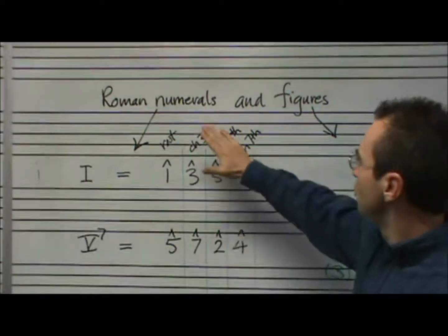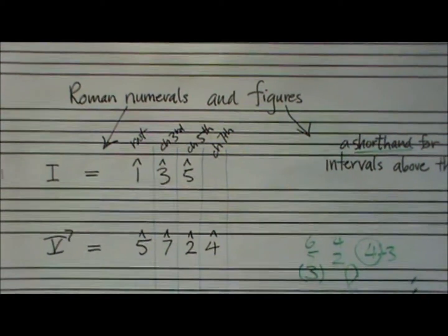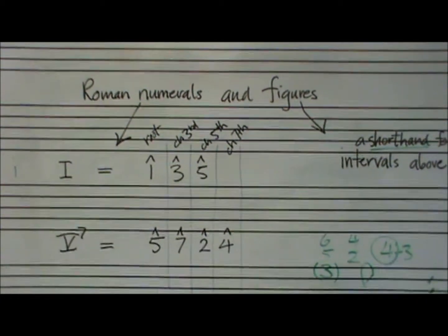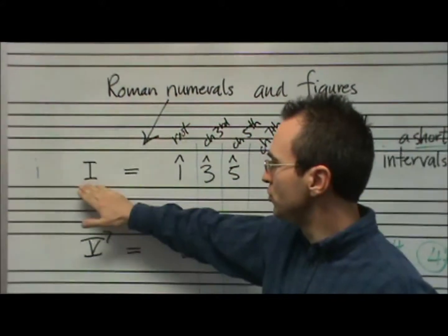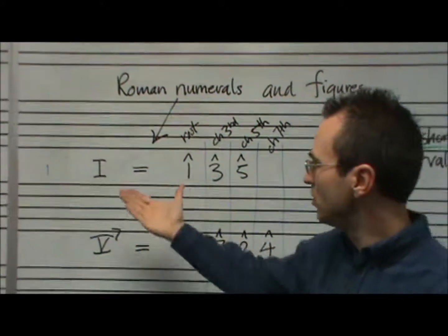So we've been talking about how Roman numerals and figures work - they're different symbols. Because there are all these numbers that come up, we've got Roman numerals to represent chords, so there's a one chord.